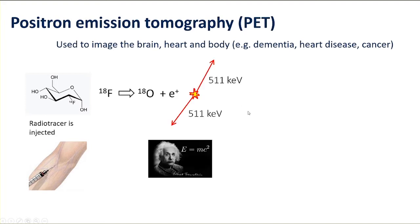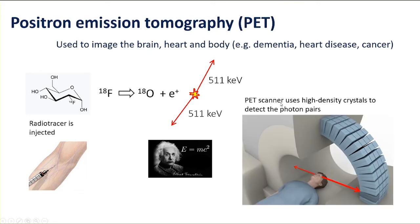We get the well-known positron-electron annihilation, giving rise to back-to-back high-energy photon pairs just by conversion of mass to energy — the mass of the positron and electron. These high-energy annihilation photons are detected by a high-density array of crystals in a PET scanner, and these days we're now looking at the arrival of total body PET, where this array of crystals extends over two metres over the body.